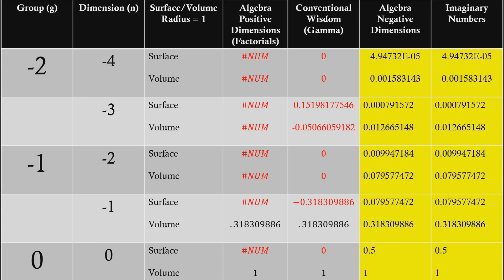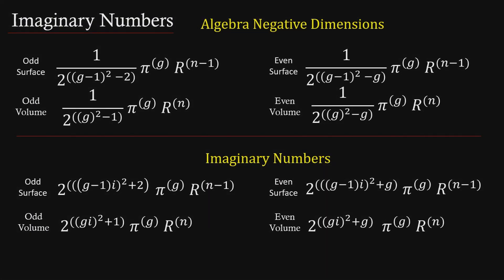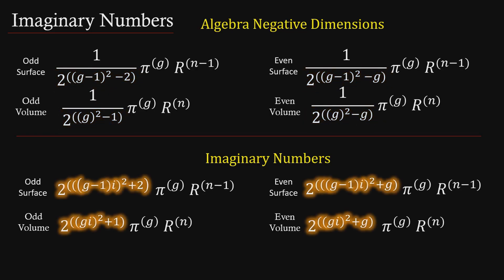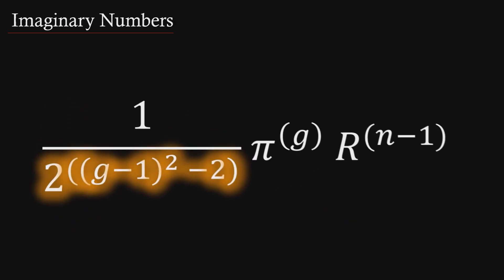The algebra for positive dimensions fails in negative dimensions because there are no factorials to support the equations, as discussed in Episode 2. However, the conventional wisdom continues its calculations and simply veers off into a completely different set of numbers. A remarkable relationship exists between the algebra for negative dimensions and the imaginary numbers methods, in that the base-2 component is in the denominator for the algebra calculations, but switches to the numerator for the imaginary numbers calculation.